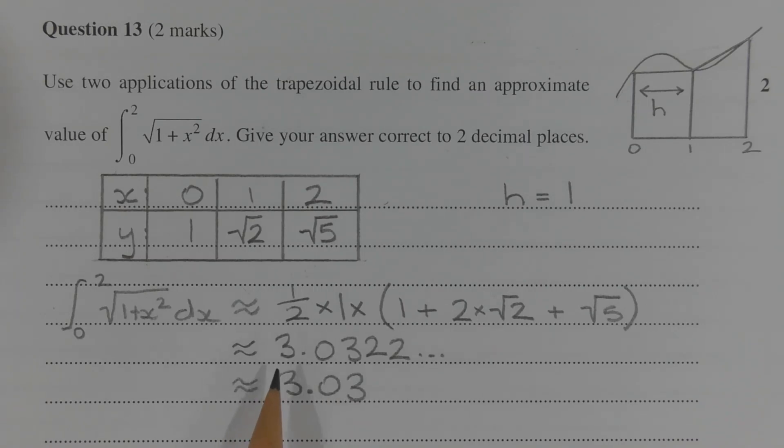which is approximately equal to 3.0322, which rounds to 3.03 correct to two decimal places.